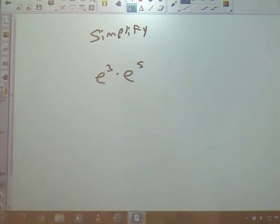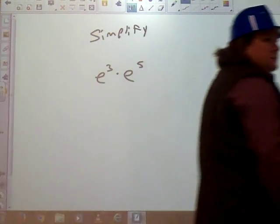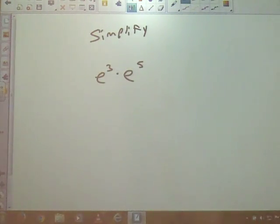Got another question to see how you're doing with your exponents here. This one just says to simplify, and all we're looking at is e to the third power times e to the fifth power. So simplify e to the third times e to the fifth.